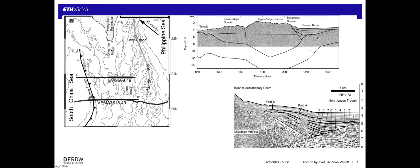The forearc basin is presumably sitting on top of upper-plate crustal material that extends up to the volcanic arc. Zooming in on the North Luzon trough forearc basin, we have an interpreted contact with the arc basement on one side and the accretionary complex on the other. The forearc basin sediments are almost flat-lying, though they are folded near the accretionary complex, indicating some thrusting and uplift there. But on the arc side it's just a gentle onlap — relatively flat-lying and not tectonically active.